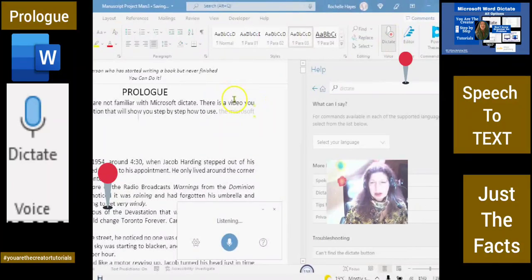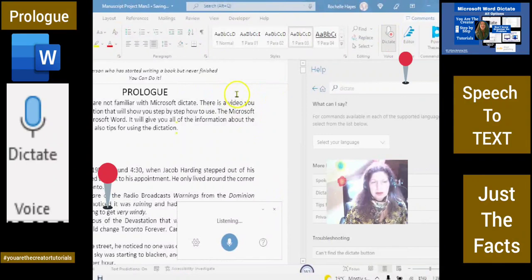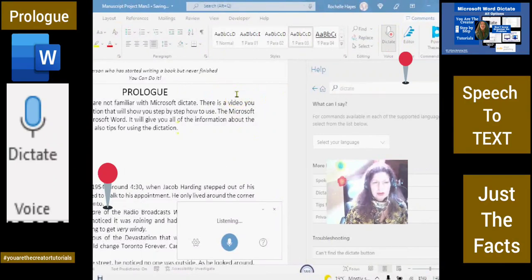It will give you all of the information about the Dictation settings and also tips for using the Dictation. New Paragraph. New Paragraph. It was October 15th, 1954, around 4:30, when Jacob Harding stepped out of his apartment and decided to walk to his apartment.